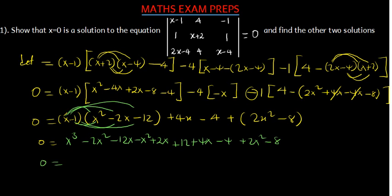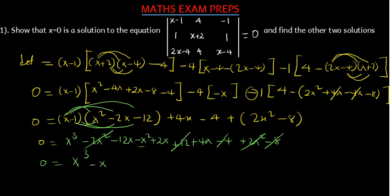So this gives us 0 equals: negative 4 minus 8 is negative 12. Negative 12 and positive 12 cancel out. We have x cubed. Negative 2x squared and positive 2x squared cancel. We remain with just negative x squared. Then negative 12x plus 2x plus 4x: 2x and 4x give 6x; 6x minus 12x gives negative 6x.